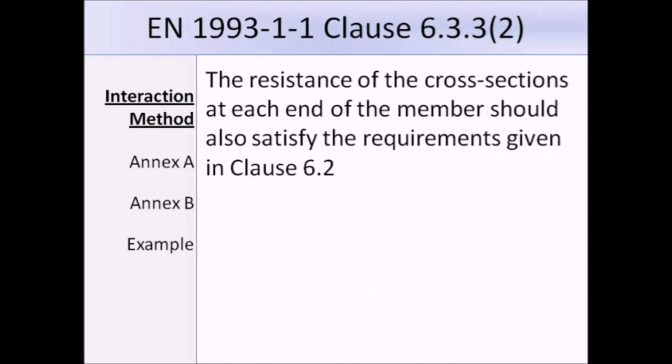Clause 6.3.3 Part 2 states that the resistance of the cross sections at each end of the member should also satisfy the requirements given in Clause 6.2, which deals with cross-sectional resistance. Basically, we need to make sure that the section has sufficient cross-sectional resistance, as well as proving the checks described in this lecture.